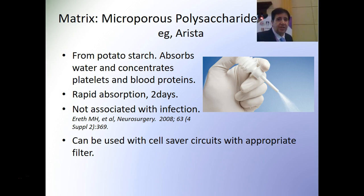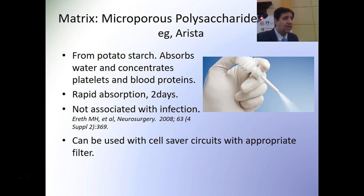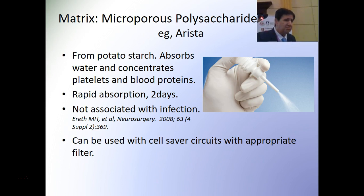Microporous polysaccharide spheres — Arista — comes from potato starch. The way it works is it creates an equivalent to dehydration: it absorbs water, thereby concentrating coagulation factors and platelets, which is how it promotes thrombus formation. It is absorbed in about two days and is rarely associated with infections. This product can be used with cell savers if the cell saver has an adequate filter to block this agent.